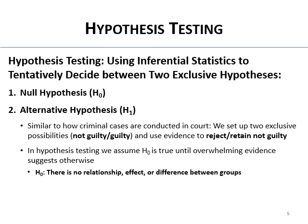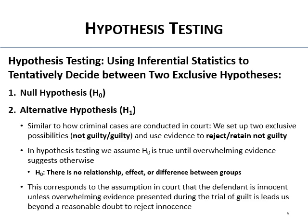The null hypothesis always says nothing is going on here — no relationship, no effect, no difference between groups. Sometimes it has a direction, like you think one group's higher or the correlation's positive, but it always includes 'equal to zero.' The no-relationship piece is always part of the null regardless of what else you think you might find. This corresponds to the court assumption of innocence unless overwhelming evidence presented at trial leads beyond a reasonable doubt to reject it.